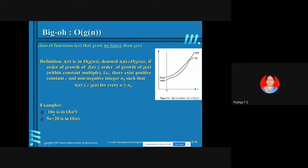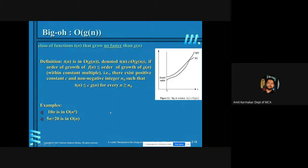For example: 10N — is it having a smaller order of growth compared to Big O of N squared? Yes. So how do we express that 10N belongs to Big O of N squared? We must express it in the format T(N) ≤ C·G(N) for all N ≥ N₀. You need to identify the values of C and N₀.